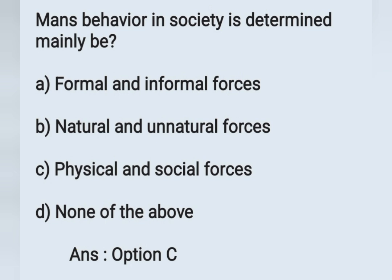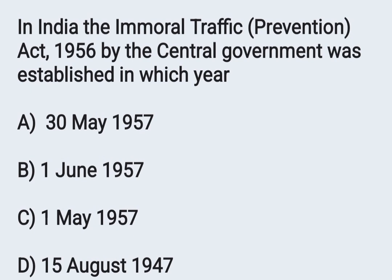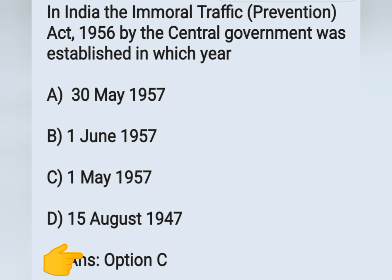The next question: in India, the Immoral Traffic Act 1956 by the central government was established in which year? Options: A) 30 May 1957, B) 1 June 1957, C) 1 May 1957, D) 15 August 1947. The correct answer is 1st May 1957. Option C is the correct answer.